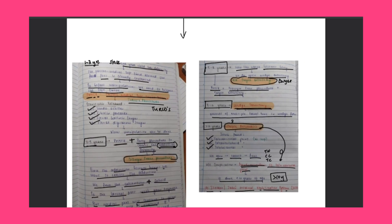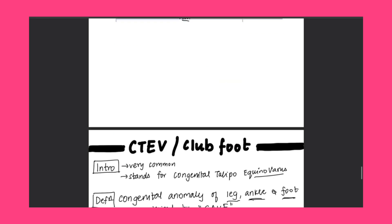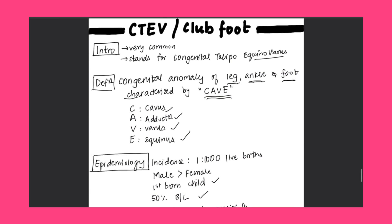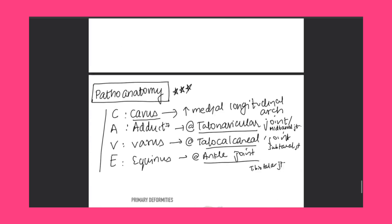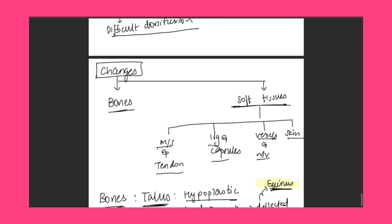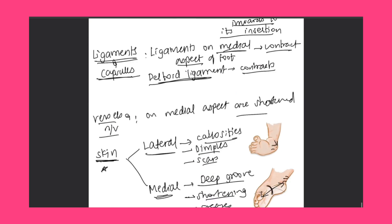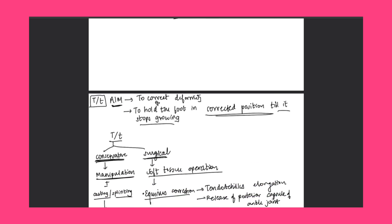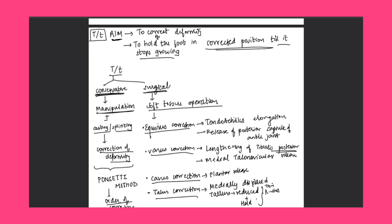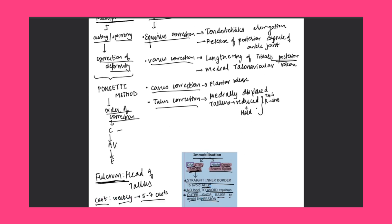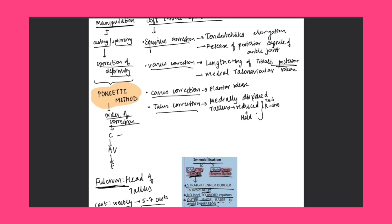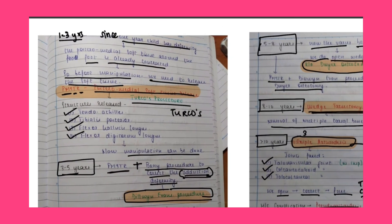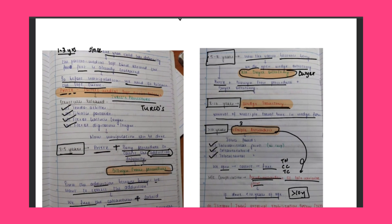To quickly revise: CTEV covers introduction, definition, epidemiology, etiology, pathoanatomy (CAVE), bony and soft tissue changes, clinical features, diagnosis (screening and confirmatory tests), and treatment. Treatment aim is to correct deformity and hold the foot in correct position until it stops growing — conservative (Ponseti method) and surgical. Age-wise: 0–1 year Ponseti; 1–3 years Turco procedure; 3–5 years Dillwyn Evans; 5–8 years Dwyer's osteotomy; 8–10 years wedge tarsectomy; greater than 10 years triple arthrodesis.